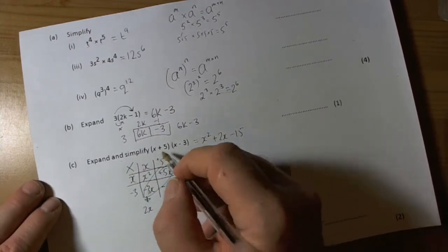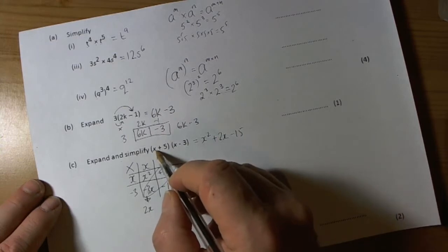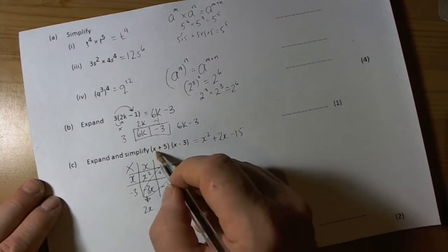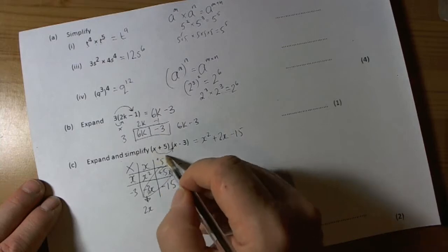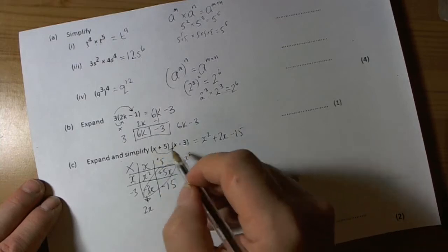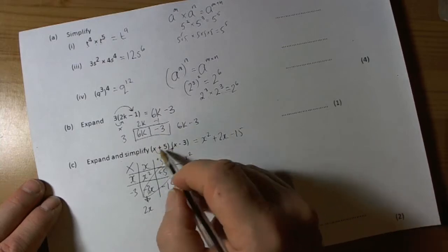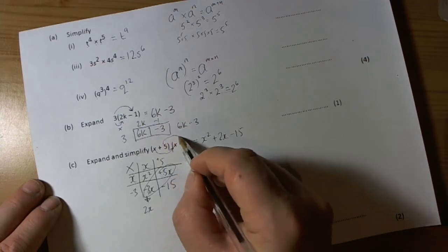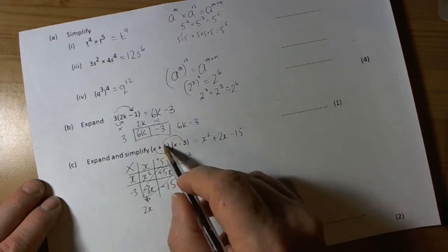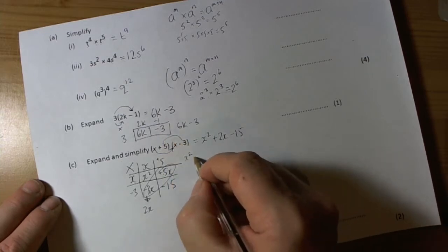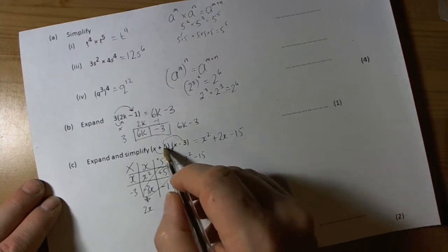Another way of thinking of this, some people like to do first outer inner last, so FOIL. So we've got x times x, which is x squared. First outer, so positive 5 times negative 3 is negative 15.